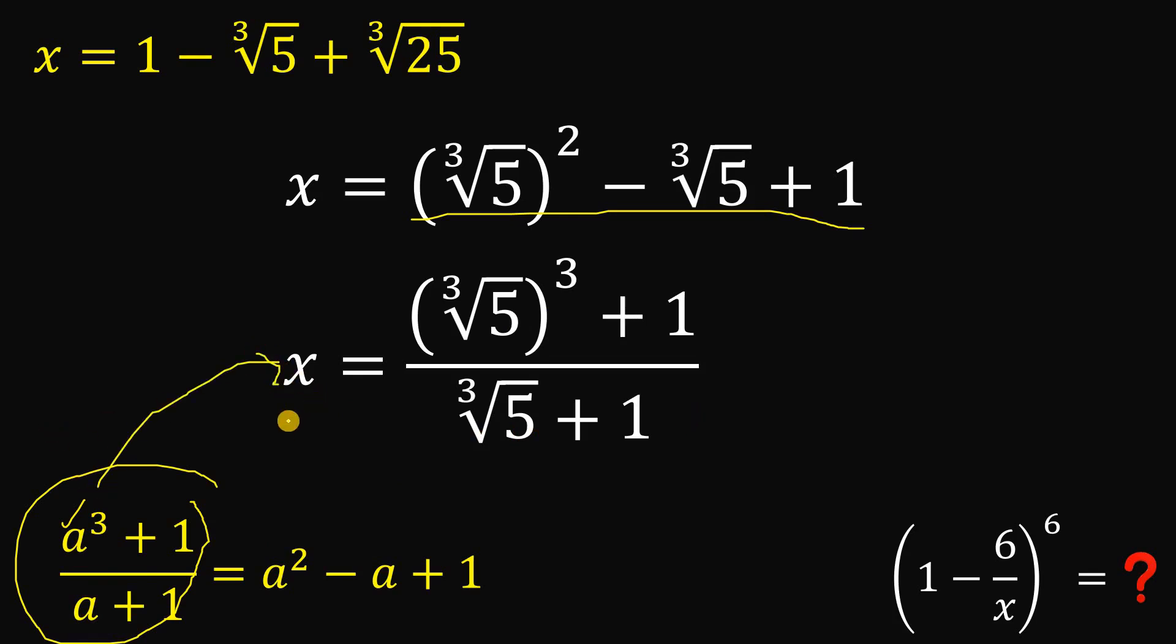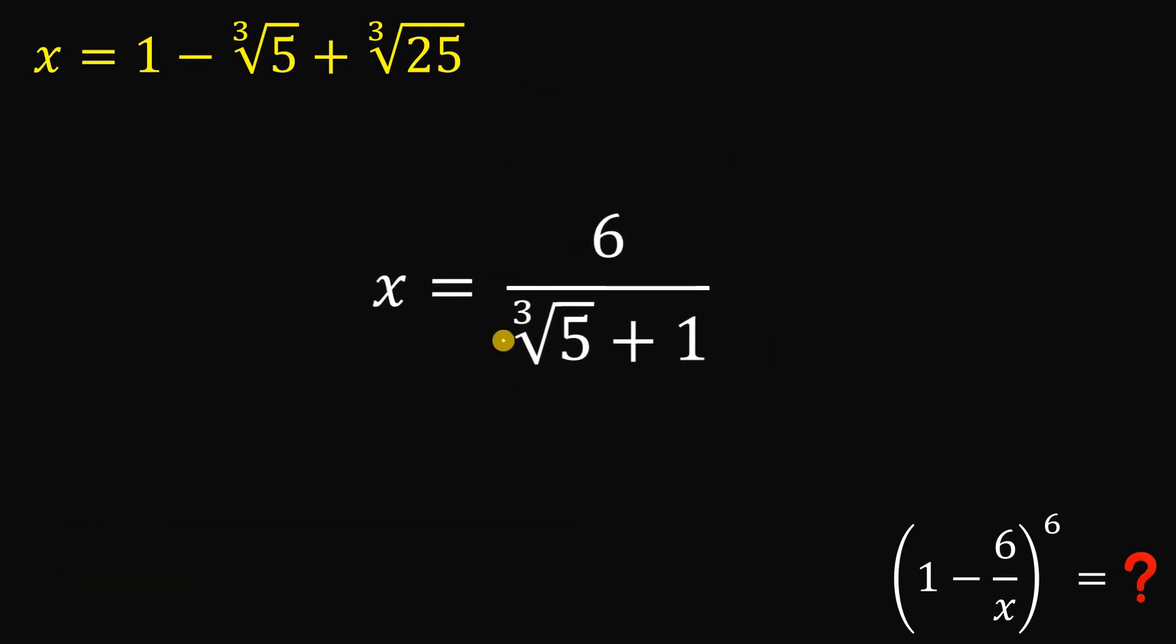All right? Now, I like this representation for x because this is easy to handle. Well, cube root of 5 cubed is just 5 and 5 plus 1 is 6. So instead of using the original given for x, I will use x equals 6 over cube root of 5 plus 1.